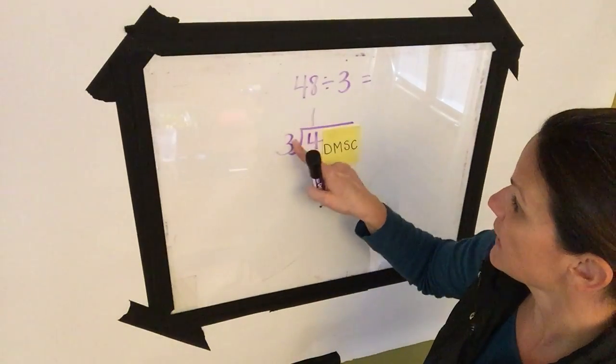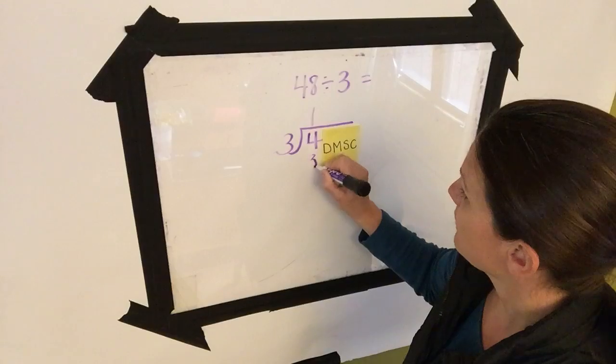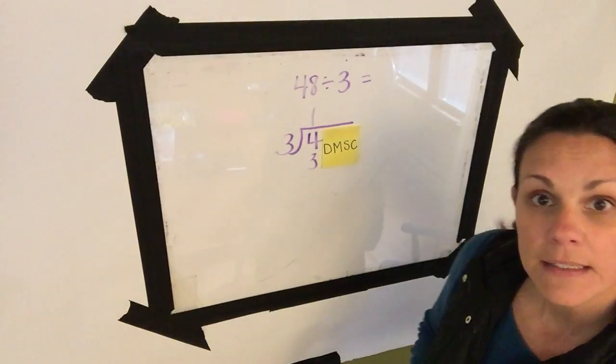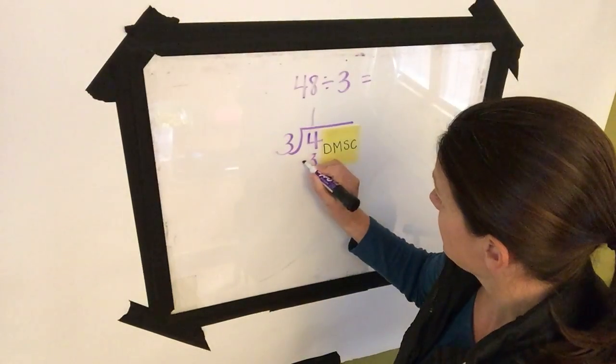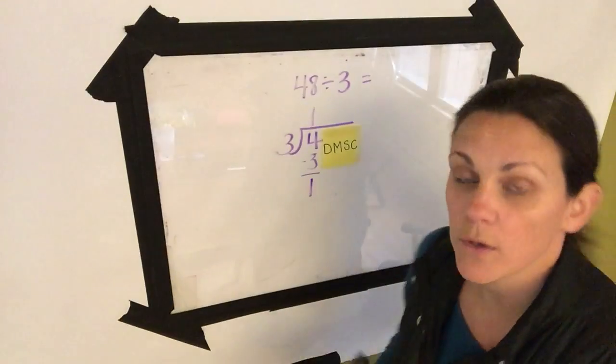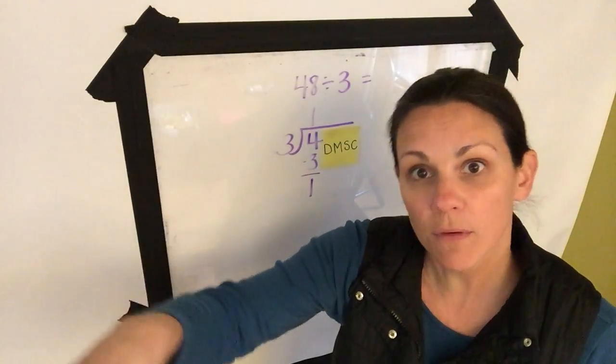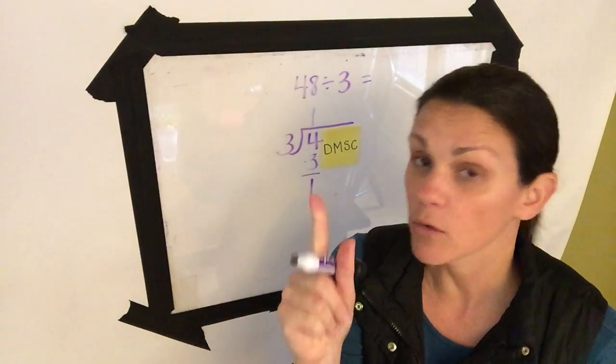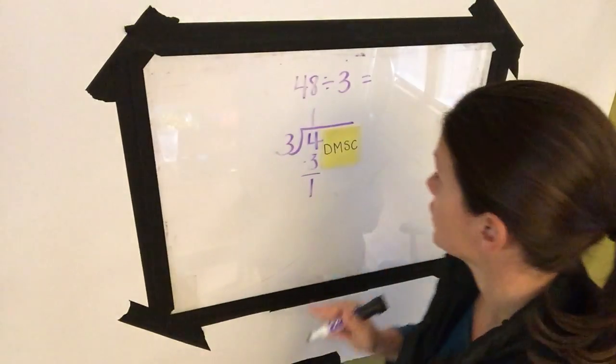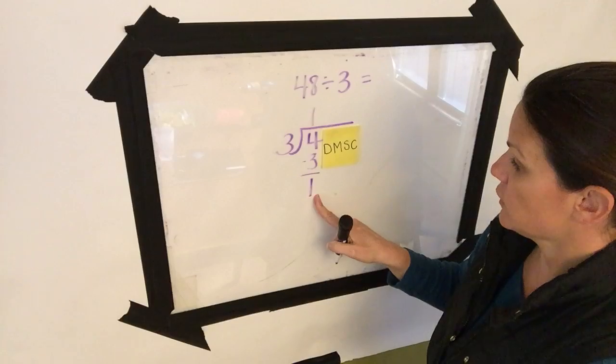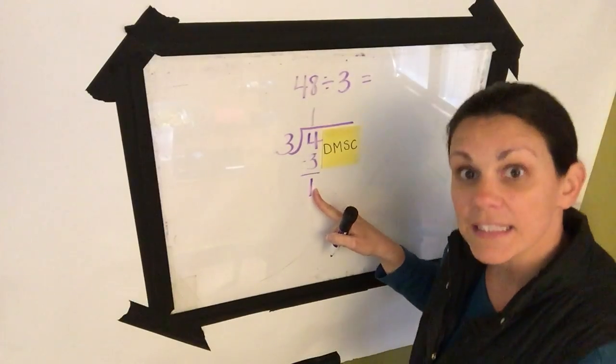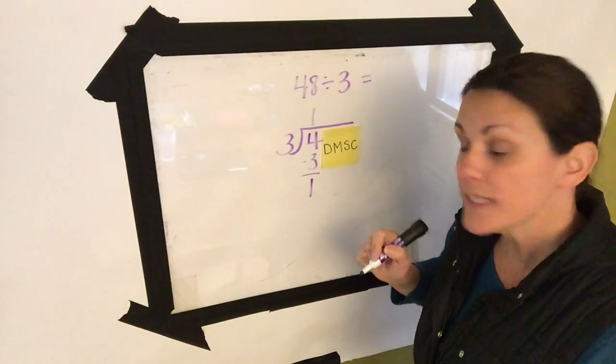Then I multiply to check. 1 times 3 and I put it below and then I subtract and I get 1 left over. That's saying if I had 4 students and I put them into groups of 3, I would have 1 student left over. That's okay. That works for long division. 1 is less than 3 so we can continue.